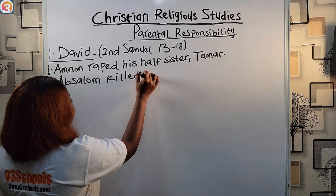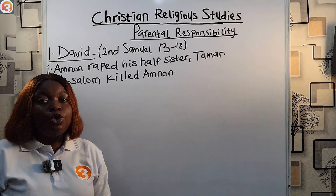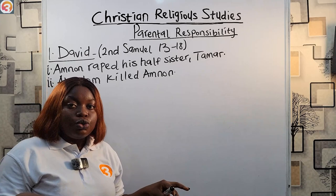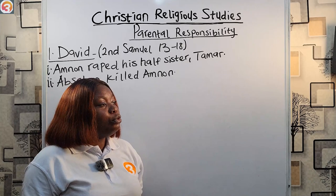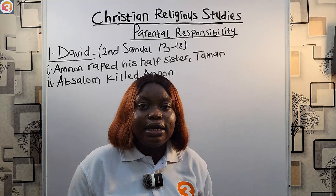Absalom killed Amnon two years after Amnon raped his half-sister Tamar. Absalom gathered all the king's sons for a celebration, but it was just a ploy to kill Amnon for what he did to his sister Tamar. Absalom killed Amnon, and again it was not recorded what punishment David gave to Absalom for committing murder.